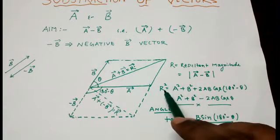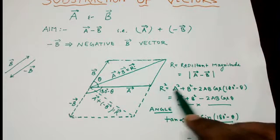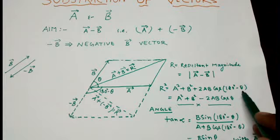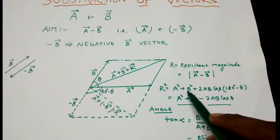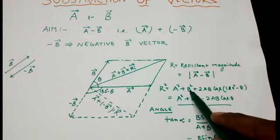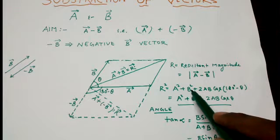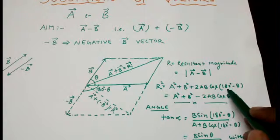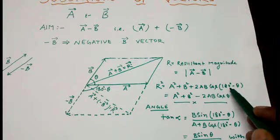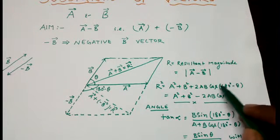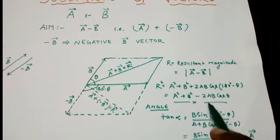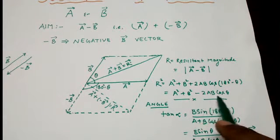Now R, that is the resultant, the square of the resultant will be given by A square plus B square plus 2AB cos 180 degree minus theta. Here minus B sign should be used, but minus B squaring will give plus B square. So I haven't shown it. Now the angle is not theta. It is 180 degree minus theta, and cos 180 degree minus theta equals minus cos theta. So the expression becomes A square plus B square minus 2AB cos theta.